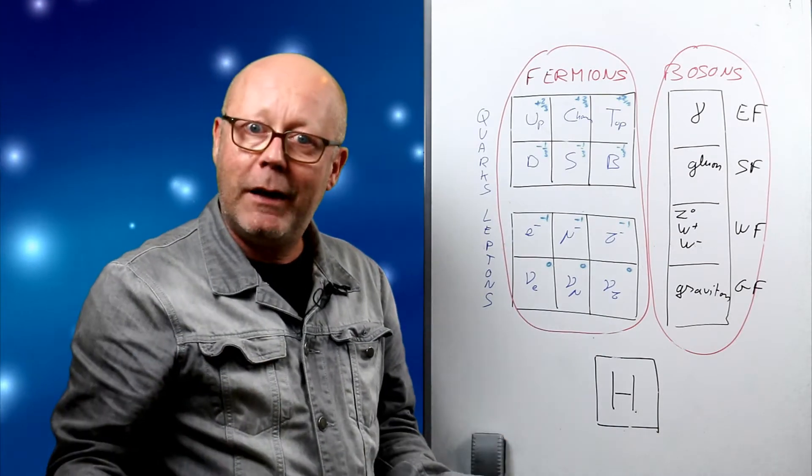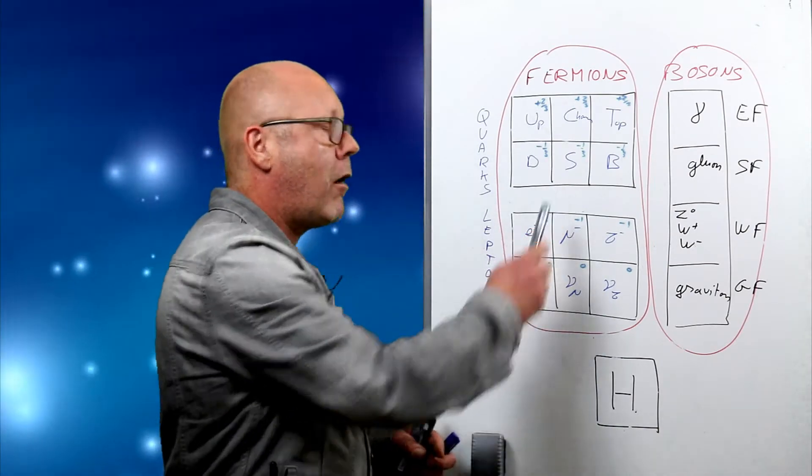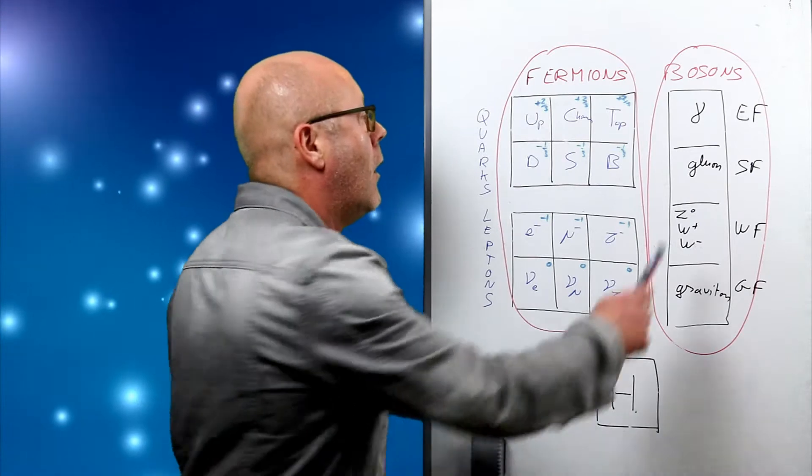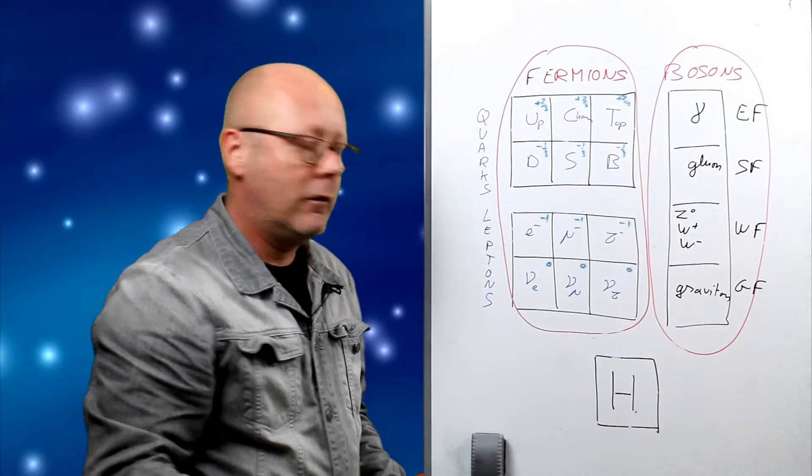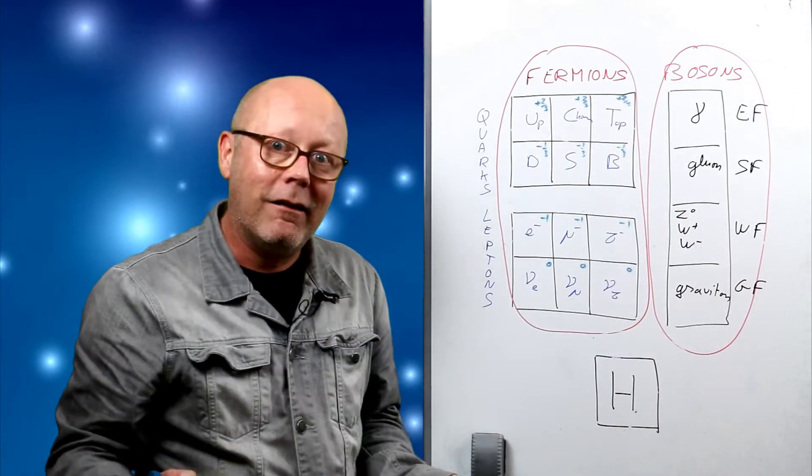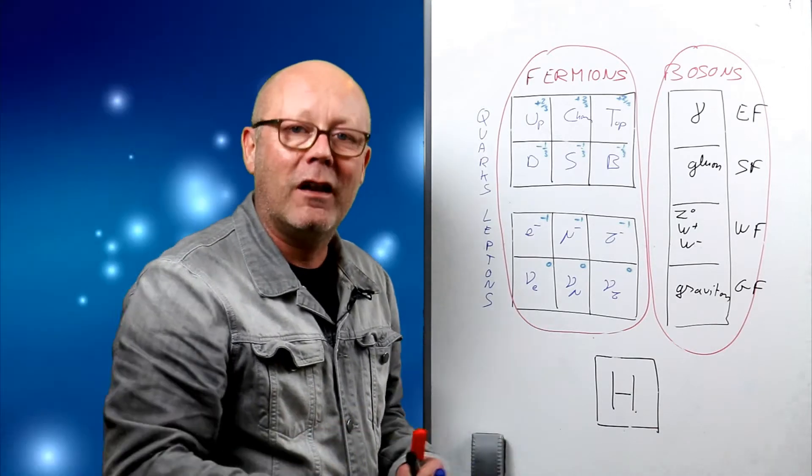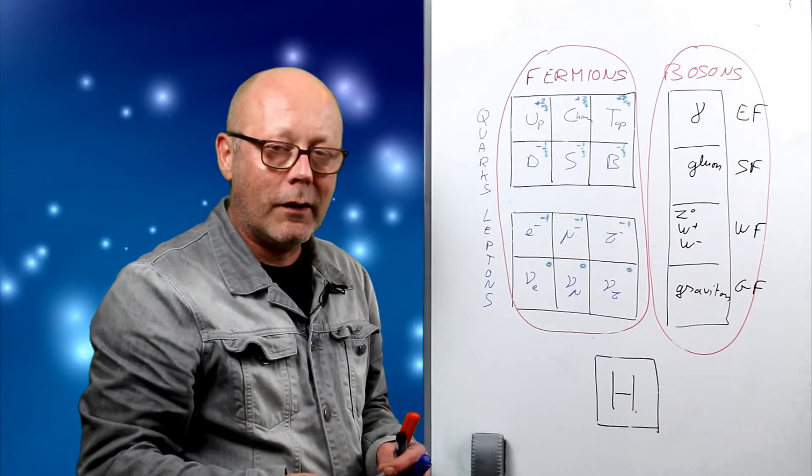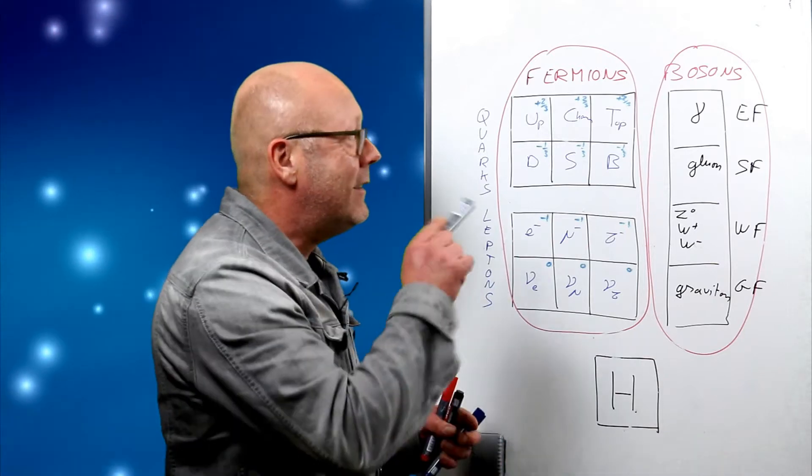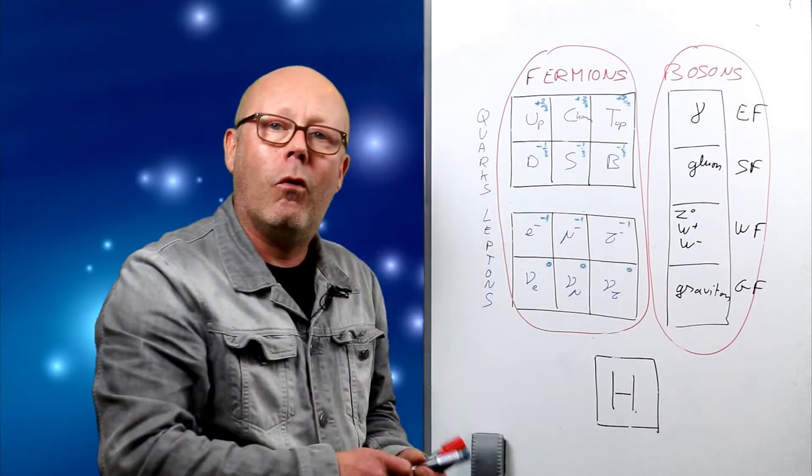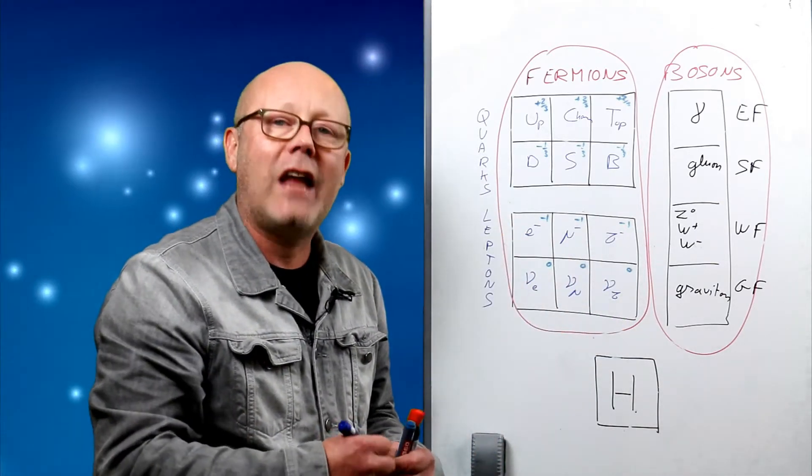Now we have a complete picture: 12 particles of matter, 4 exchange particles, and 1 outlier, the Higgs boson that gives mass to the other particles. This scheme is called the standard model.